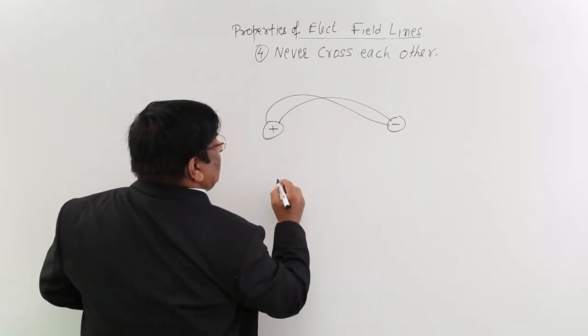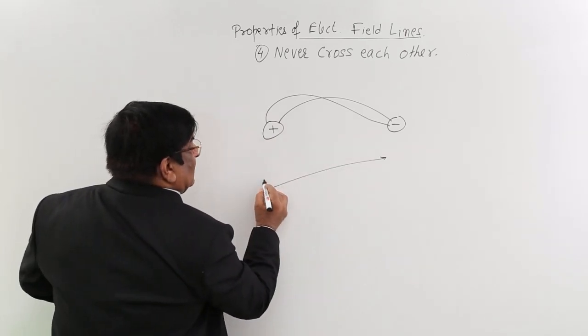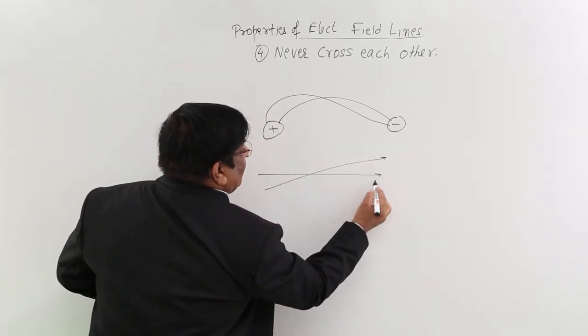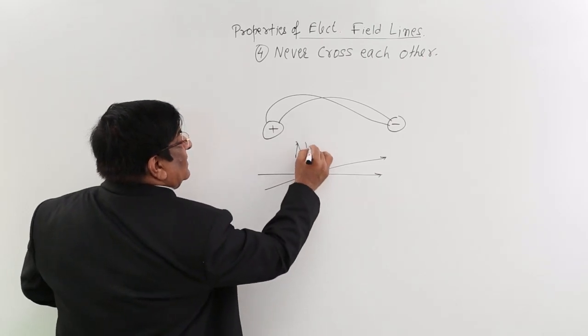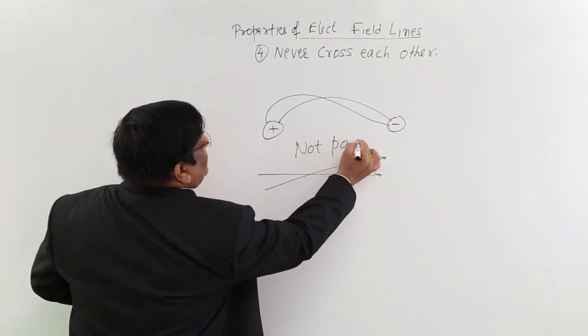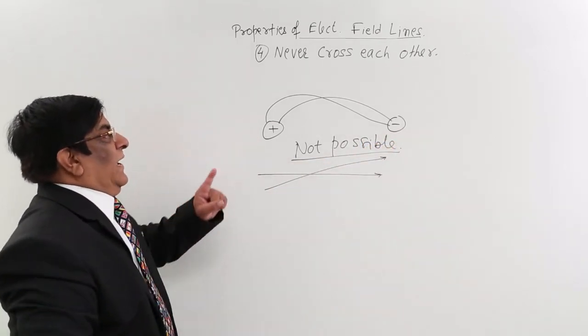Even if these are not there, there is one electric field line at this space and there is another electric field line in this space which are crossing each other. These are not possible, and that means it is not permissible. Why?